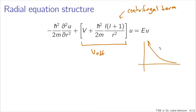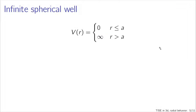As an example, consider the infinite spherical well. Instead of the infinite square well, let's do this in spherical coordinates. Our potential V(r) has a simple form: for particles less than a certain radius a from the origin, the potential is zero; for particles outside the well, the potential is infinity — the same potential structure we had for the particle in a box in one dimension.